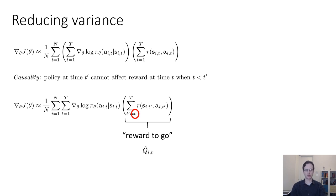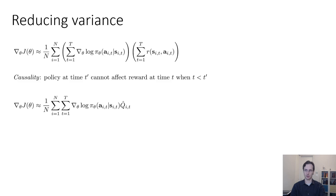We sometimes use the symbol q-hat i comma t to denote the reward to go. Taking a moment to think back to the previous lecture where we also used the symbol q: the reward to go, q-hat here, actually refers to an estimate of the same quantity as the Q-function seen in the previous lecture. We'll get much more into this in the next lecture when we talk about actor-critic algorithms. For now, we'll just use a similar symbol with a hat on top to denote that it's a single-sample estimate.